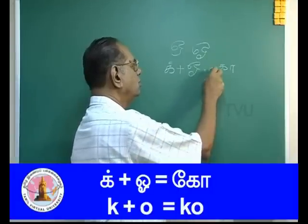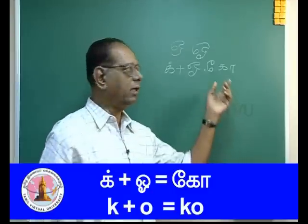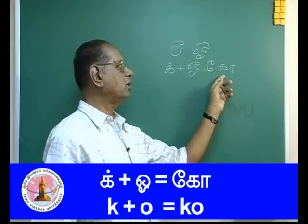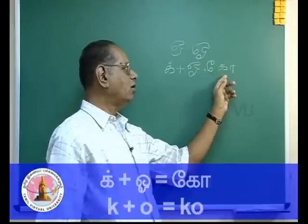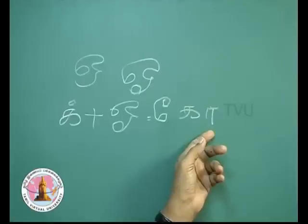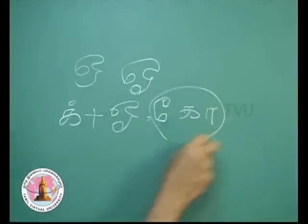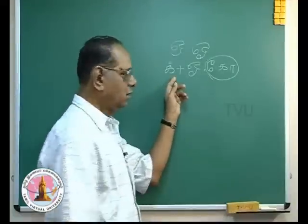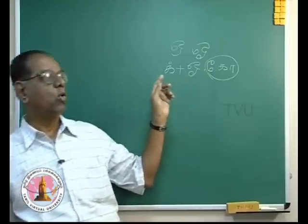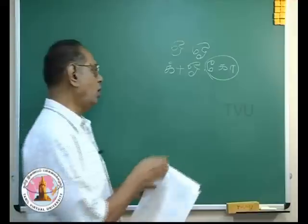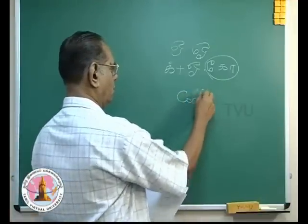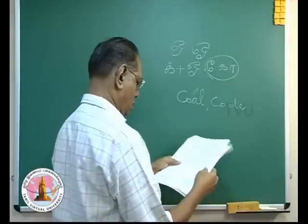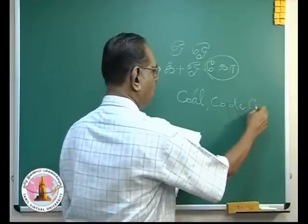Do you remember this symbol? The symbol for A. This symbol is added before the consonant. So this symbol for A, the consonant, and the symbol for O make one whole, and this is CO. With O plus O, you have CO.